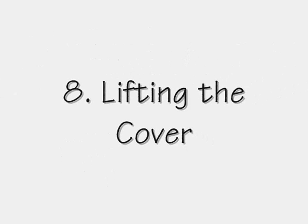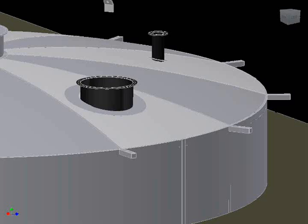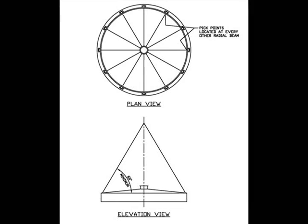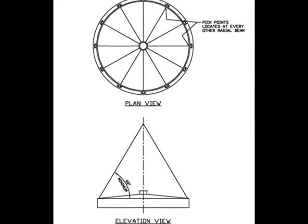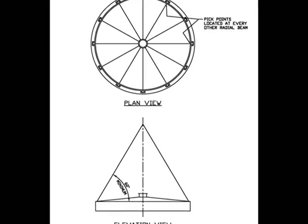Number eight, lifting the cover. Lifting lugs, which are not provided by West Tech, should be placed at the connection between the radial beams and the side sheet. Pick points are located at every other radial beam. Rigging must be held at a 60 degree minimum angle as shown in the West Tech O&M manual.